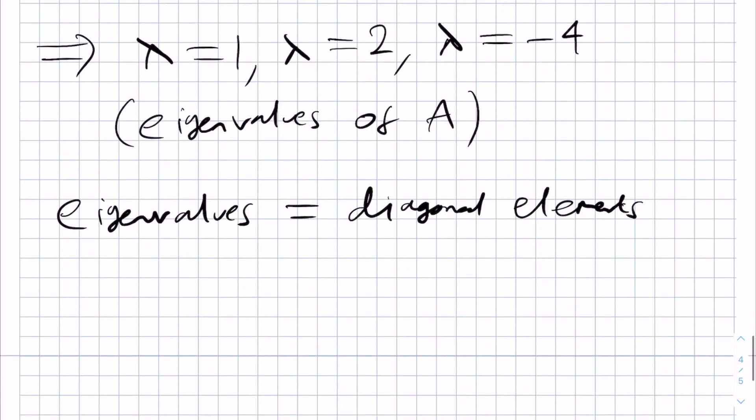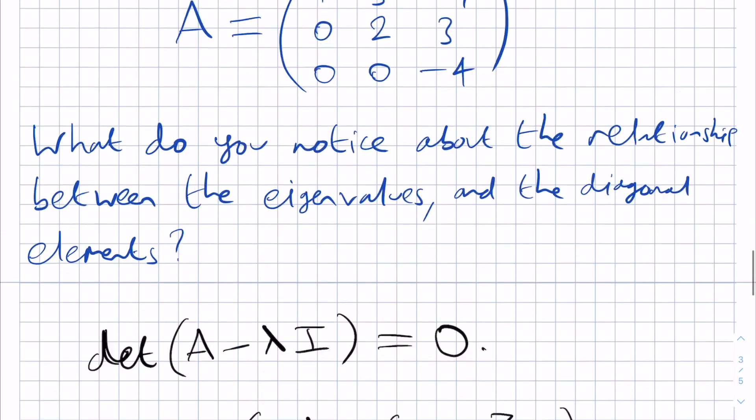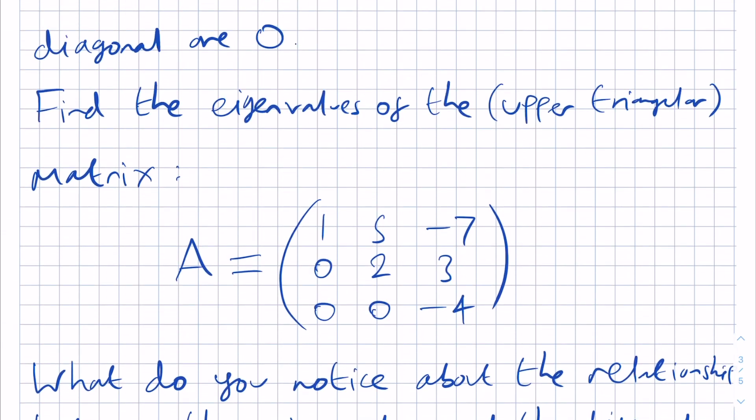Finally note that since the product of the eigenvalues is the determinant in general for any matrix, this also tells us that for an upper triangular matrix we can find the determinant by just multiplying together the diagonal elements. So in this case the determinant of this matrix here would be minus 8 by multiplying these three elements together.